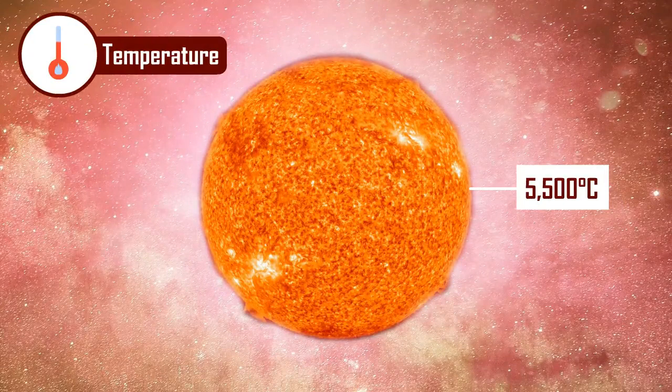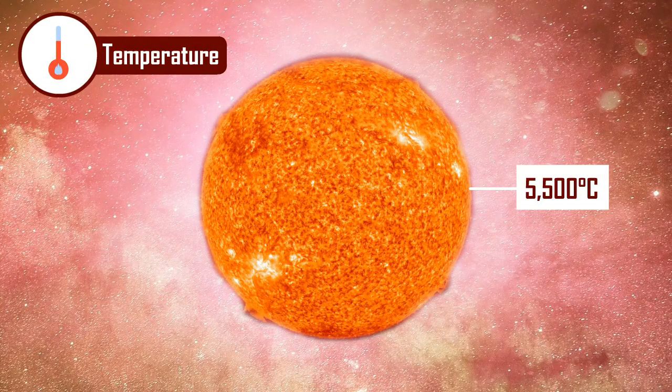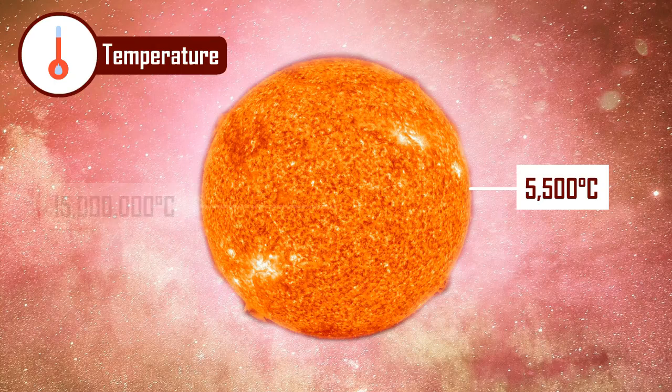The outer surface of the sun is about 5,500 degrees Celsius, while temperatures in the core reach more than 15 million Celsius.